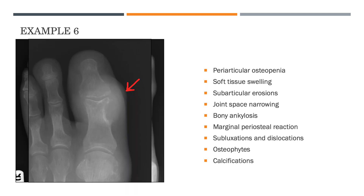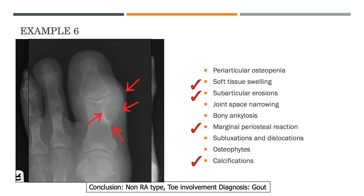Similarly, in this case we see soft tissue swelling, a subarticular erosion in the form of a big punched-out lesion in the proximal phalanx, a little bit of periosteal reaction where a tophus is forming, and peripheral calcifications. Putting all of these together, this is without a doubt gout.